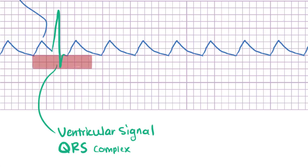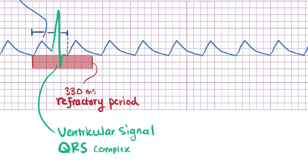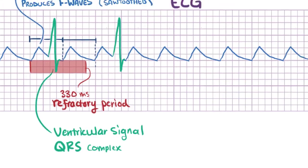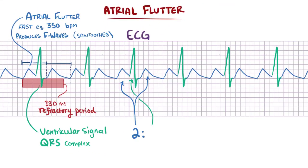If the cells in the AV node need to wait about 330 milliseconds, the next atrial contraction, which happens in about 170 milliseconds, won't be able to conduct to the ventricles. The next atrial event after that lands at about 340 milliseconds from the first one, which means that the AV node is out of refractory and ready to go — so it conducts that one. In this example, therefore, we've got a 2 to 1 atrial to ventricular rate, because for every 2 atrial contractions, only 1 of them will lead to a ventricular contraction.